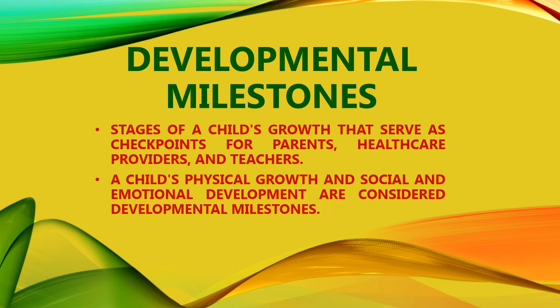At every stage of development, each child is expected to undergo physical development, along with social, emotional, and cognitive development. Most children develop skills and abilities in roughly the same order. The order will be the same, but the time frame won't be exact — some babies will walk early while others will walk later, perhaps a few months earlier or a few months later.